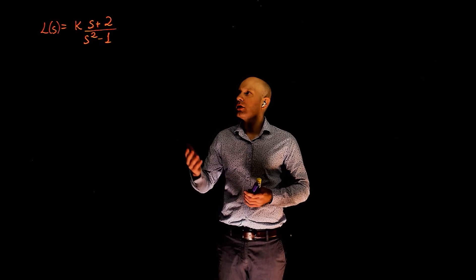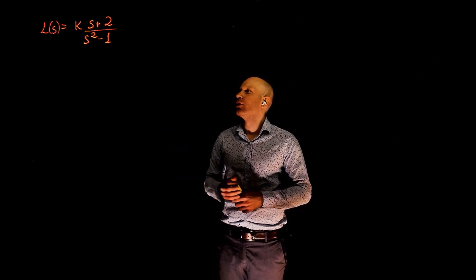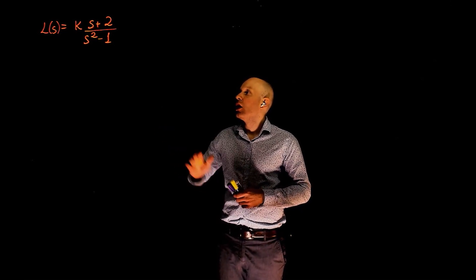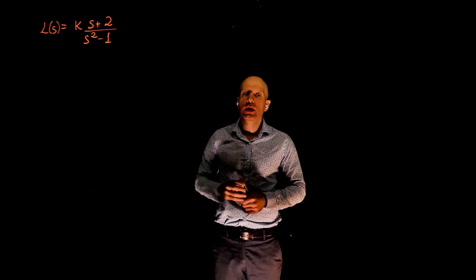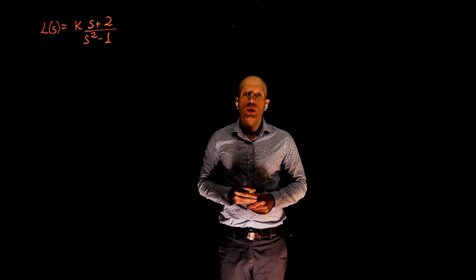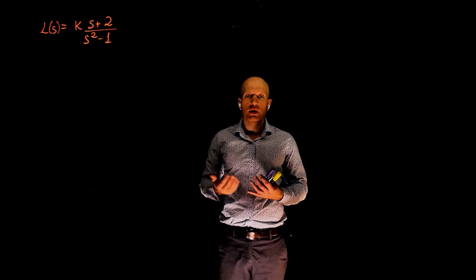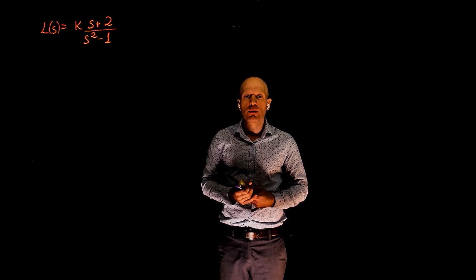In this example, we are given a loop transfer function (s+2)/(s²-1), all multiplied by a control gain k. The question is: what is the range of k that will make this system closed-loop stable?